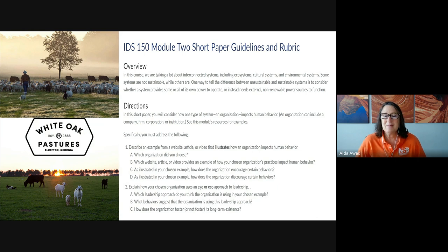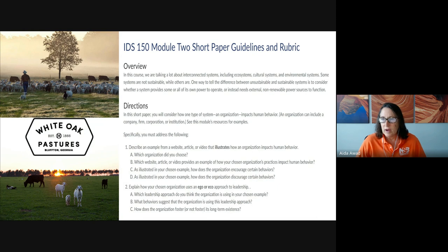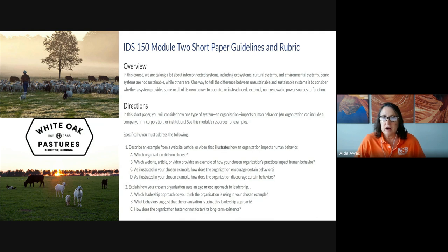I know sometimes picking the organization can be the hardest part of this assignment, so I want to give you an example. The example I want to share with you is an organization called White Oak Pastures. White Oak Pastures is a sixth generation farm in Georgia. It began as a traditional farm and ran as a traditional farm until just a few years ago when the fifth generation farmer — his name is Will Harris — began to practice regenerative farming, land management, and humane animal husbandry.